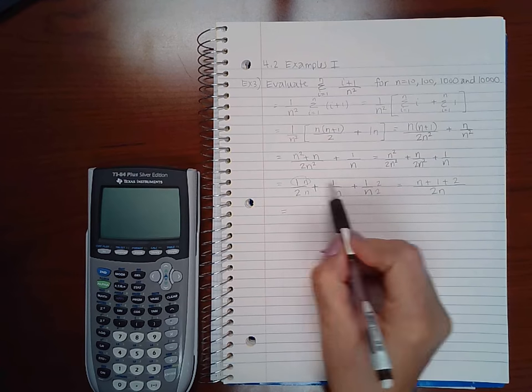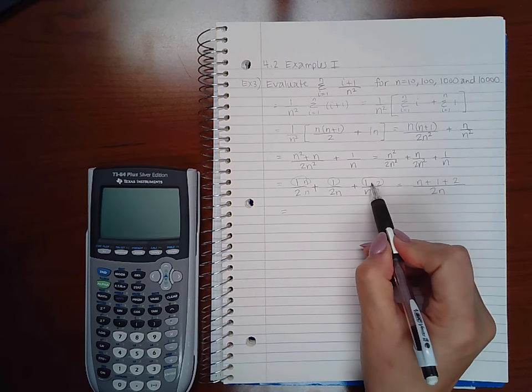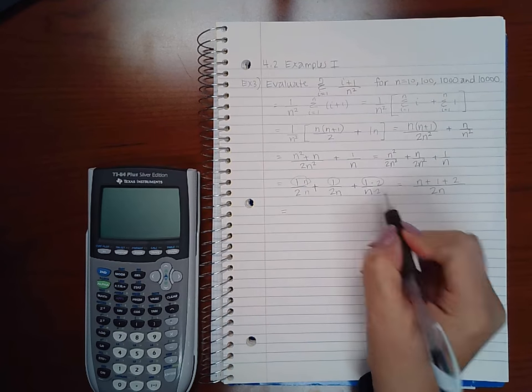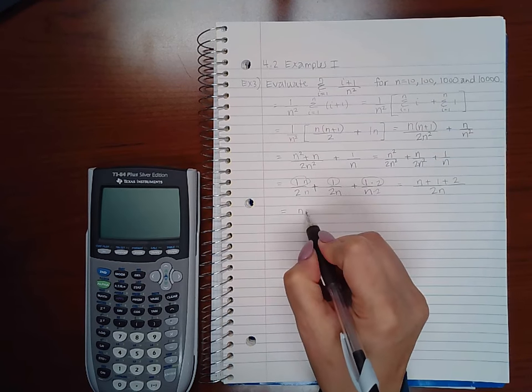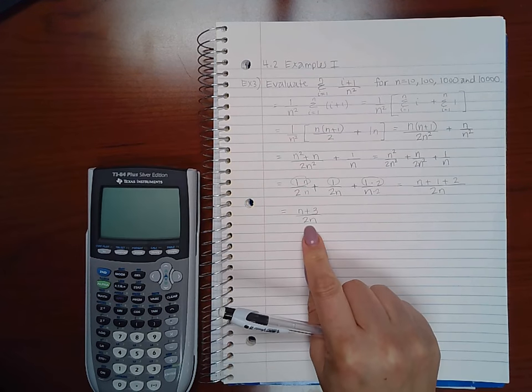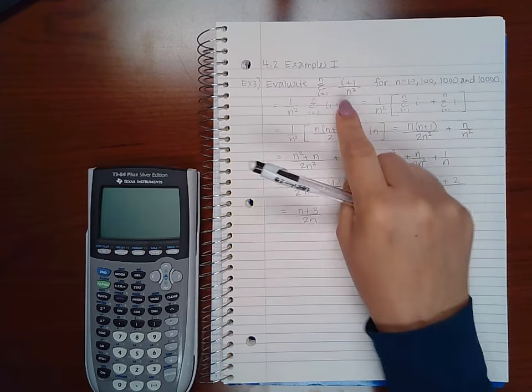So this is n, this is 1, this is going to multiply, so that's going to be 2. And then all my denominators will be 2n. So then I'll end up with n plus 3 over 2n. So this is the value you will get for this summation.